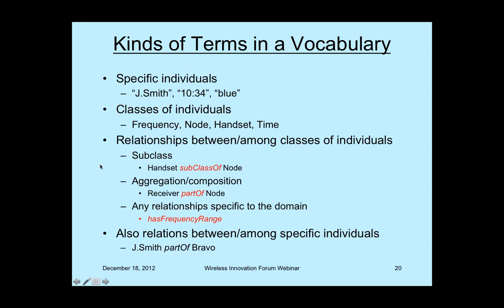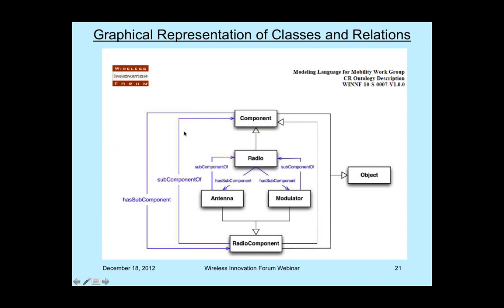These are the types we need to represent in the standard vocabulary. A standard vocabulary can also be represented graphically — for instance, radio is a subclass of component, shown with this arrow in the graphical notation. Or modulator is a subcomponent of radio. Or a specific radio component is a subcomponent of a specific component. These show domain-specific relationships and generic subclass or aggregation relationships.